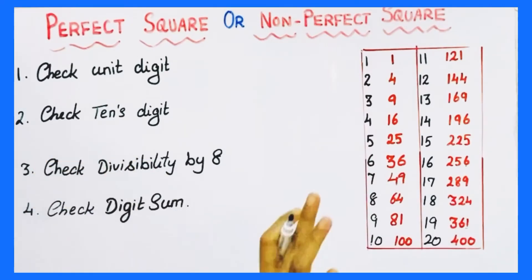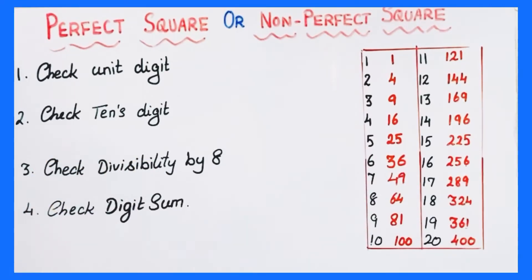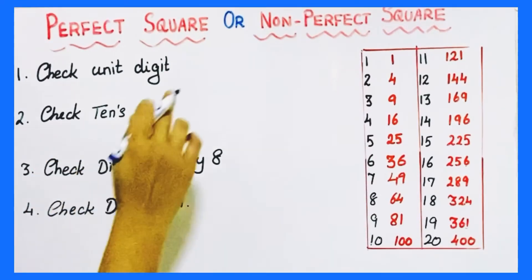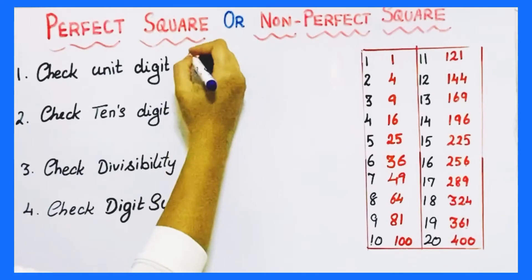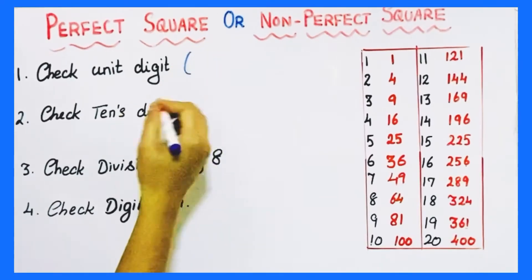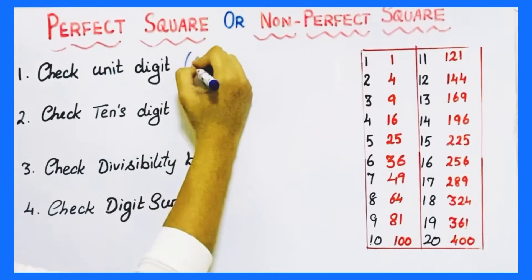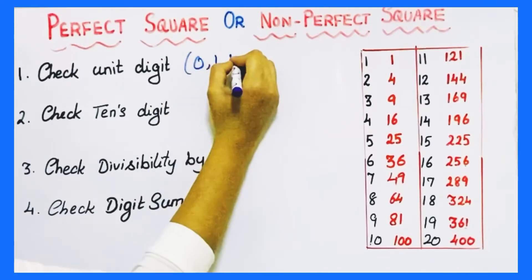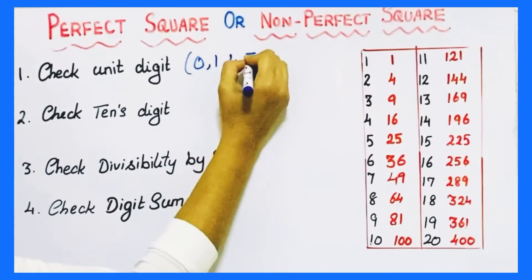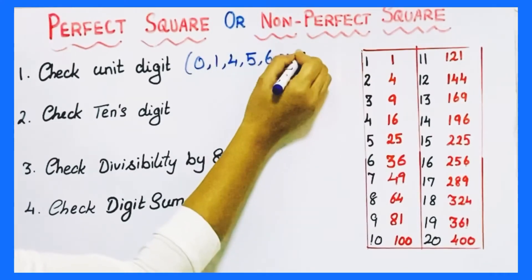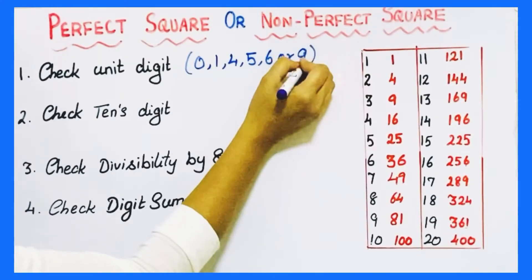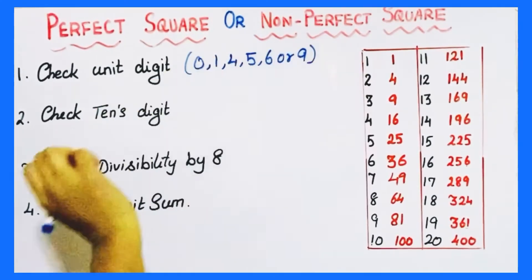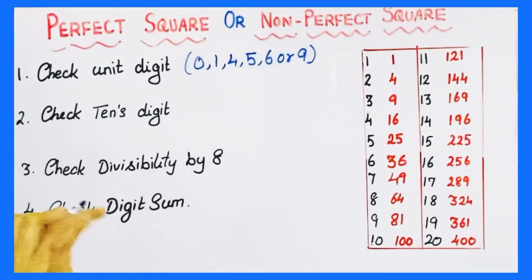A perfect square number never has the unit digit 2, 3, 7, or 8. So a perfect square number always has the unit digit 0, 1, 4, 5, 6, or 9. The unit digit will never be 2, 3, 7, or 8.